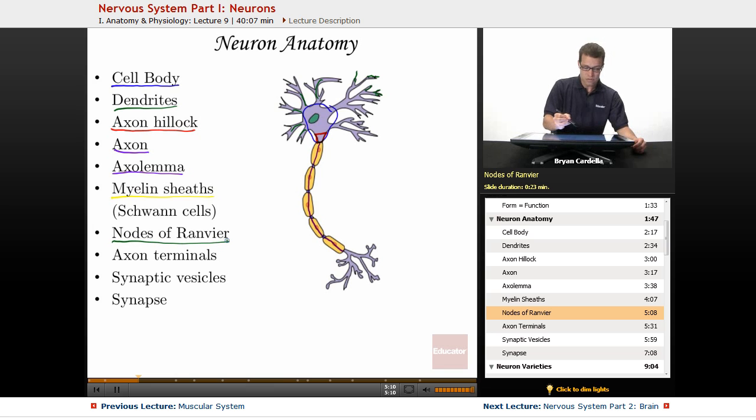Nodes of Ranvier are right here. They're the parts of the axon that are exposed. So right here, you've got a Schwann cell. It's covering that part of the axon. But in between these two Schwann cells, there's an exposed axon section. That's a node of Ranvier, depending on who you ask.